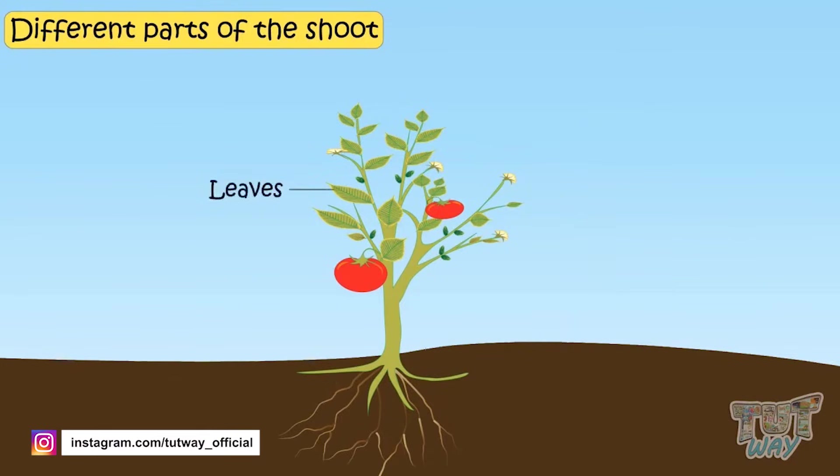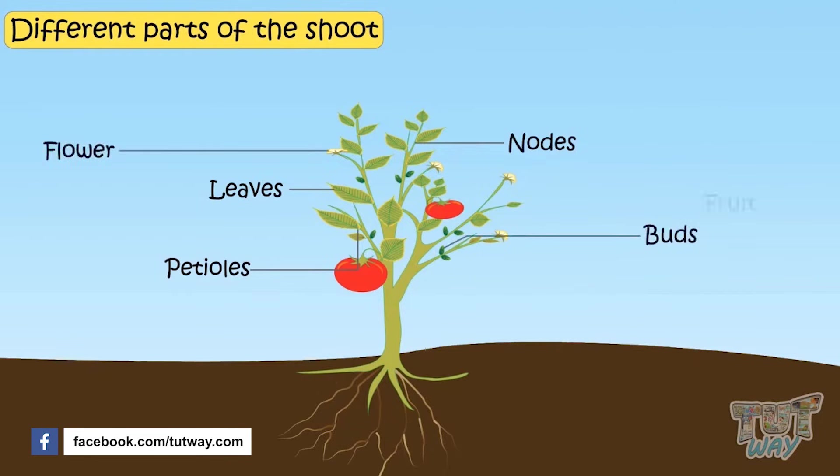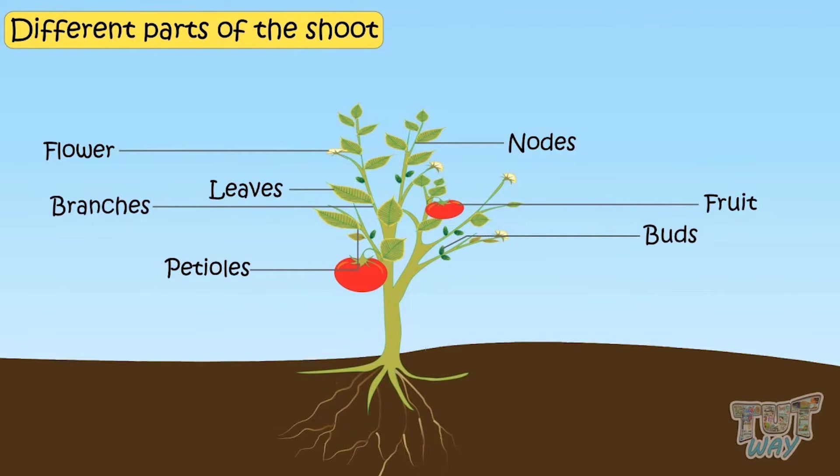Leaves, petioles, nodes, buds, flowers, fruits and branches are all different parts of shoot and each part plays a different role.